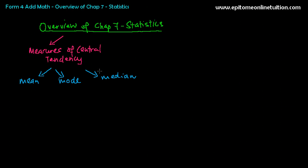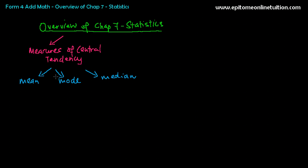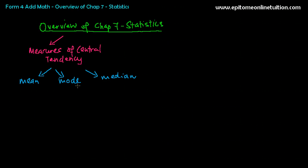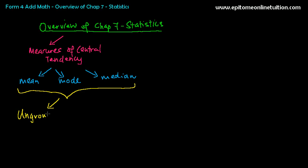Generally, these are the three things that you will be learning. The difference in this Chapter 7 Statistics in Form 4 Add Math compared with your Form 3 is that there are two types of data. One, we call them Ungrouped Data. Another one would be Grouped Data.